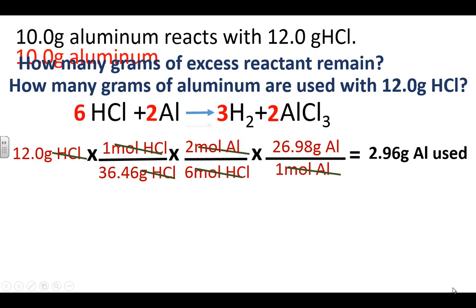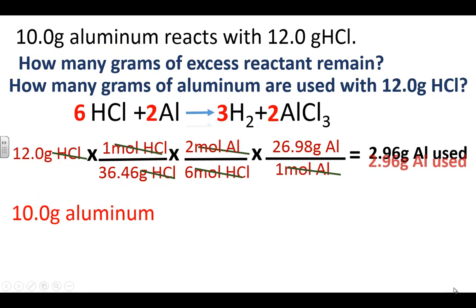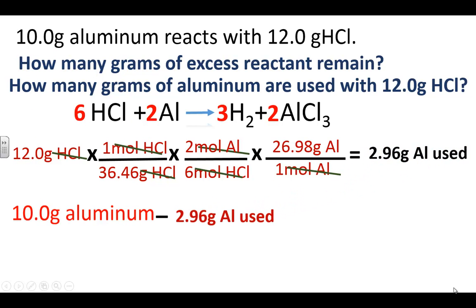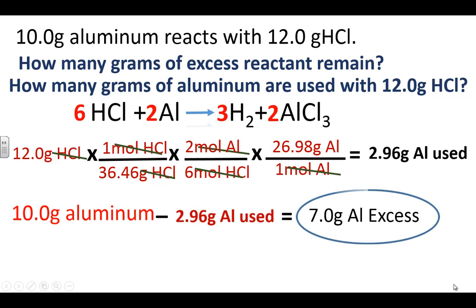If we are given 10 grams of aluminum and 2.96 grams are used, all we need to do is find the difference between the amount we had to start with and how much reacts with hydrochloric acid. Rounding to one decimal place — because we're subtracting — we find that 7.0 grams of aluminum are in excess.